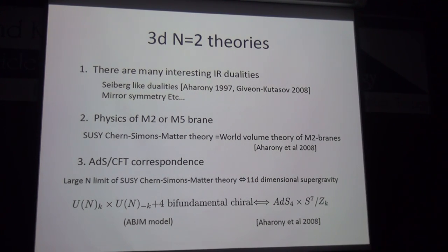This wider class is called Giveon-Kutasov theory. There are also other dualities: mirror symmetry and related structures.